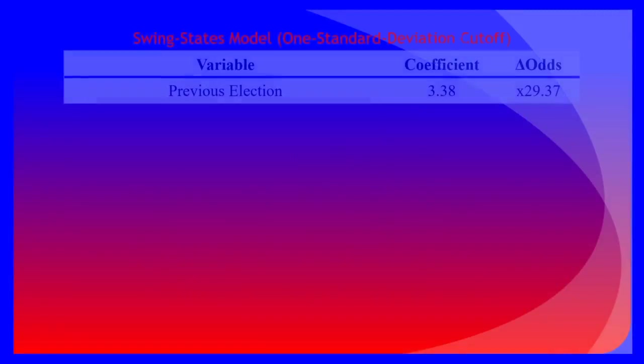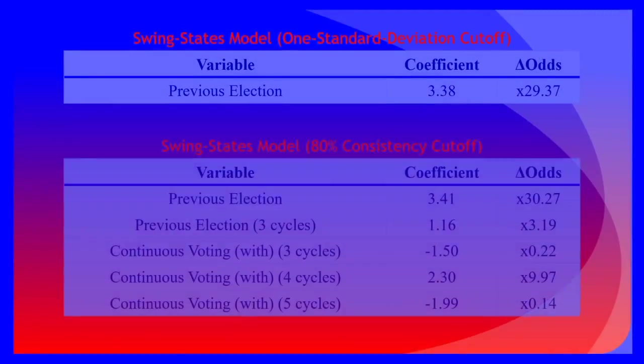Using the steps previously discussed, we can generate two additional regression models specific to these subsets of swing states. In both cases, the immediately previous election cycle is the most, if not the only, statistically significant predictor variable of voting behavior.